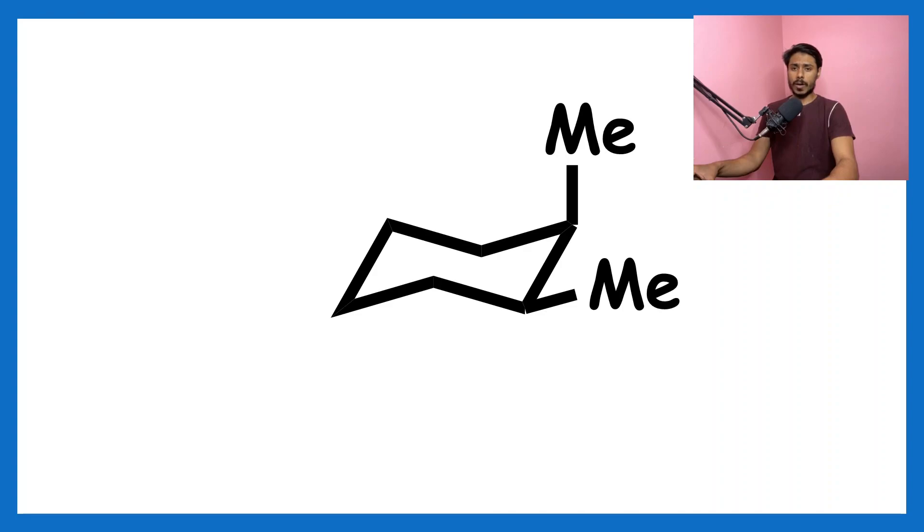For that, we have to ask two questions. First: does the molecule contain any plane of symmetry? Because a plane of symmetry will destroy the chirality. But if we look into the molecule, there is no plane of symmetry.